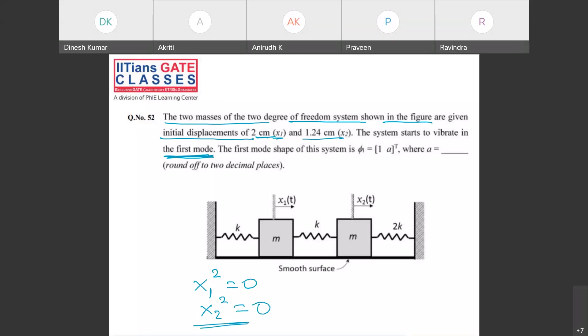In last class I told when system vibrates only in first mode, what happens? Your X₁ corresponding to second mode is 0 and same way your X₂ corresponding to second mode is 0. If system vibrates only in first mode, we know what are our equations. This X₁ first mode plus X₁ second mode equals the initial displacement of mass M₁.